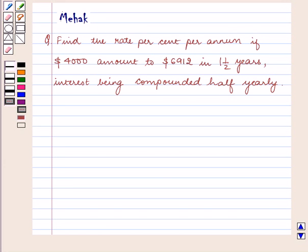Hello and welcome to the session. In this session we are going to discuss the following question. Find the rate percent per annum if $4,000 amount to $6,912 in one and a half years,